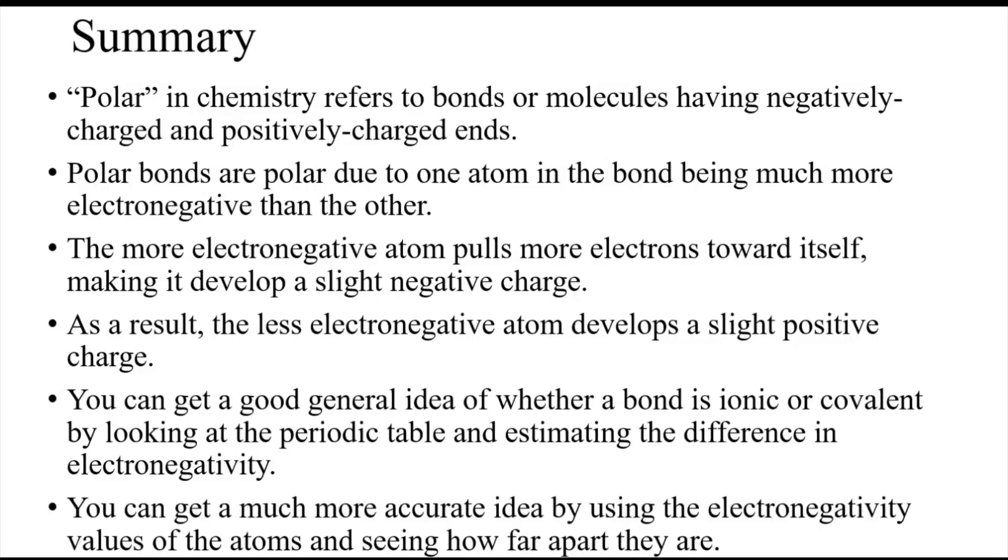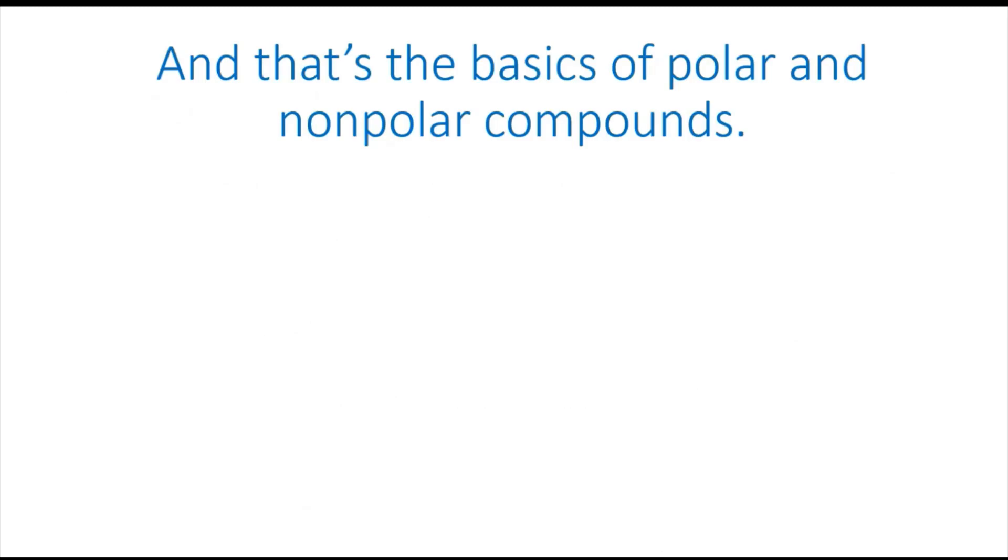Just by looking at the periodic table, you can get a good general idea of whether a bond is ionic or covalent by being able to estimate the difference in electronegativity. However, you can get a more accurate idea by using the actual electronegativity values and seeing how far apart they are. And that is it as far as the basics of polar and non-polar compounds.